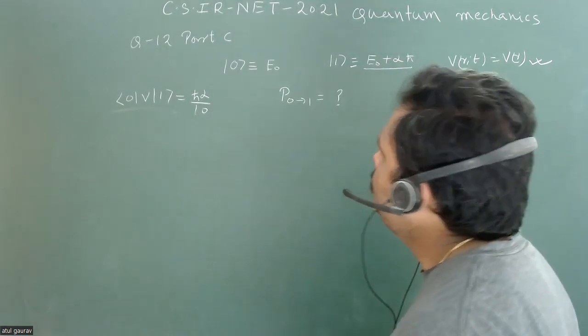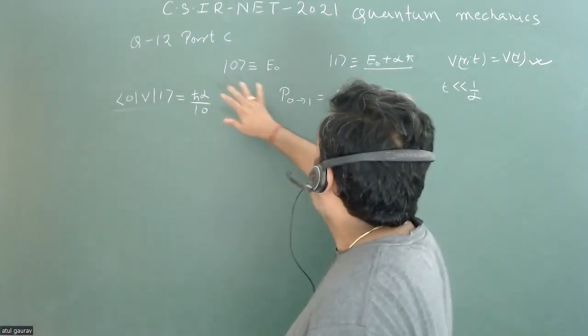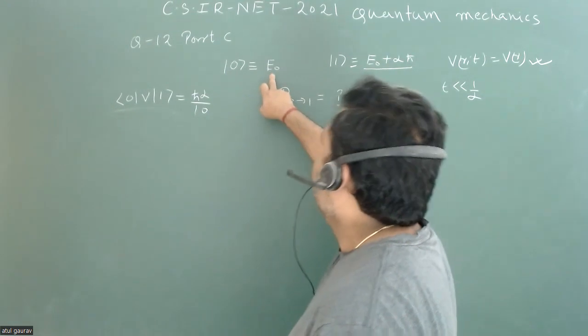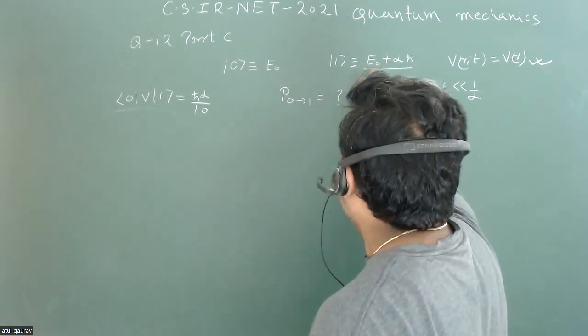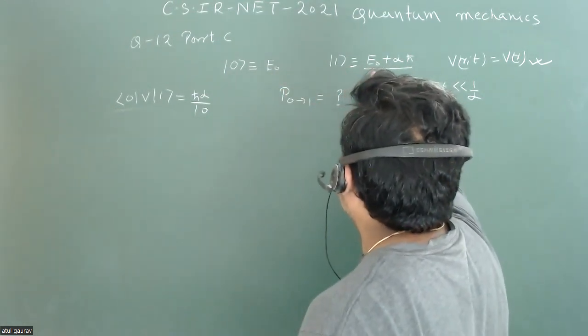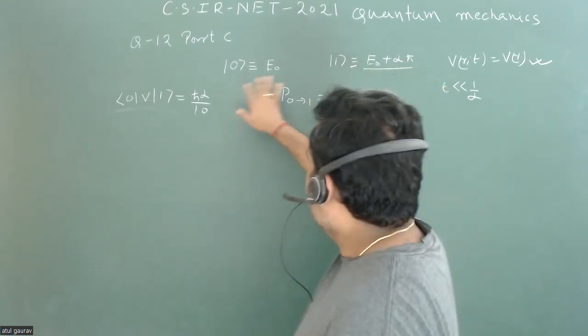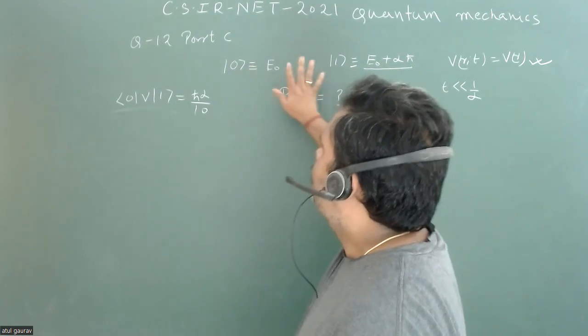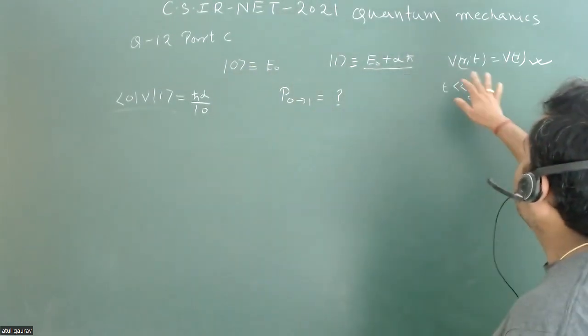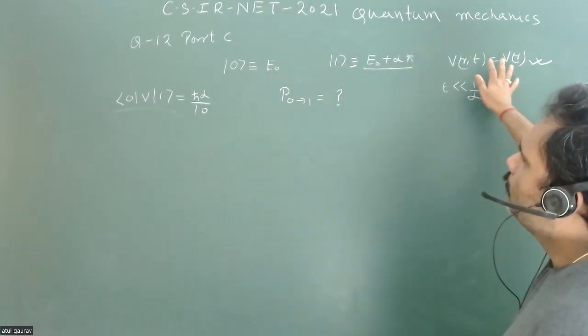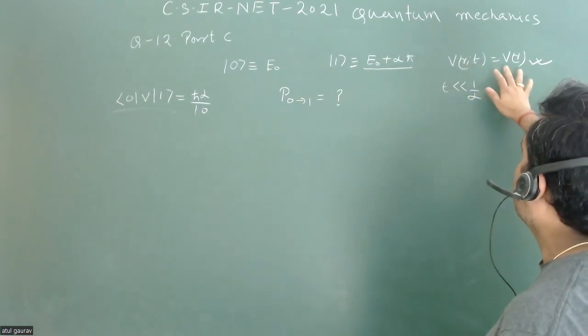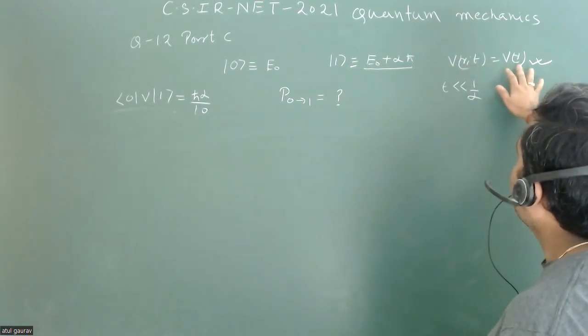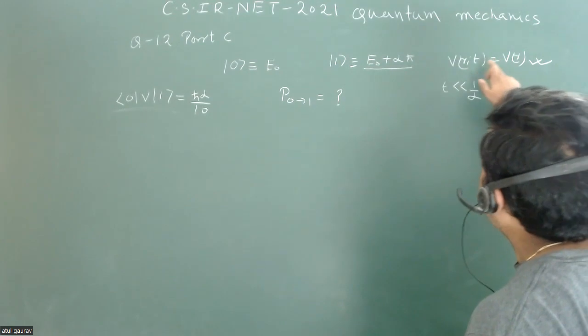Let me explain this particular problem. There is a state zero and a state one, with corresponding energies E₀ and E₀ + αℏ. Don't be confused that φ₀ = E₀, this is just a representation. There is some potential going to act on this particular system, which will be only a function of the space part, not a function of time.